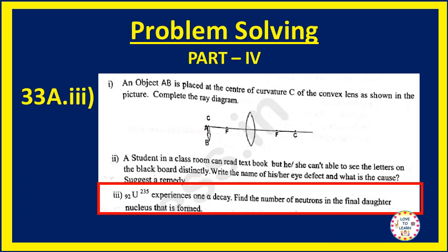Now next one is 33A, third subdivision question from part 4. What they have given is uranium experiences 1 alpha decay. Find the number of neutrons in the final daughter nucleus that is formed.